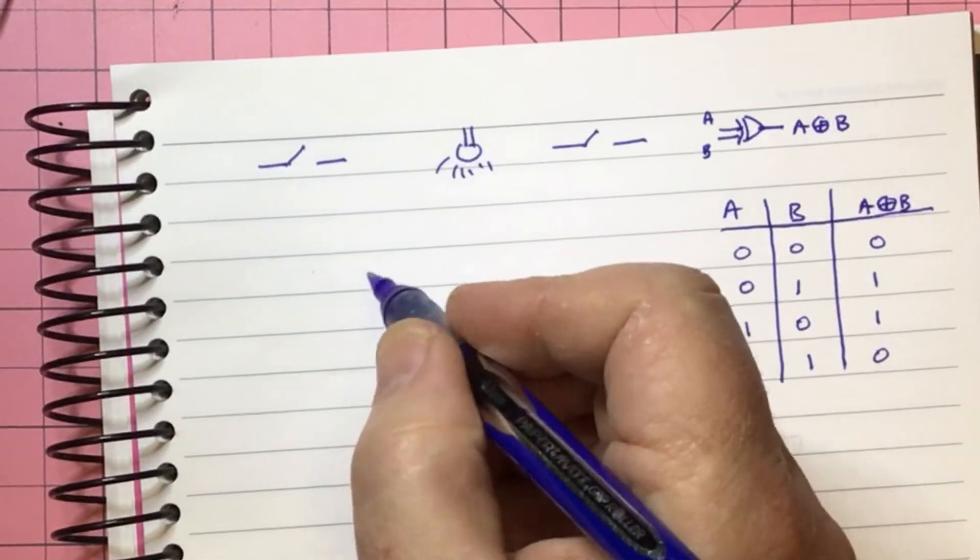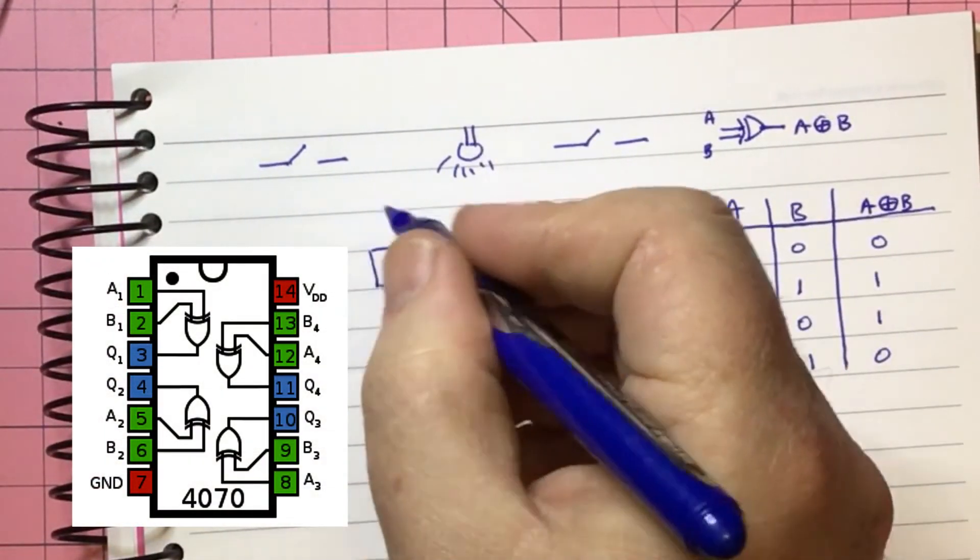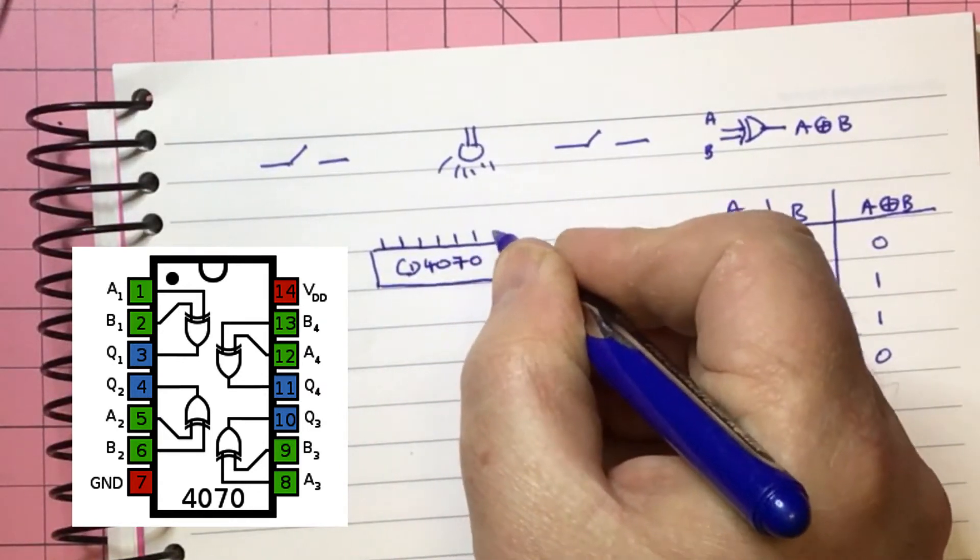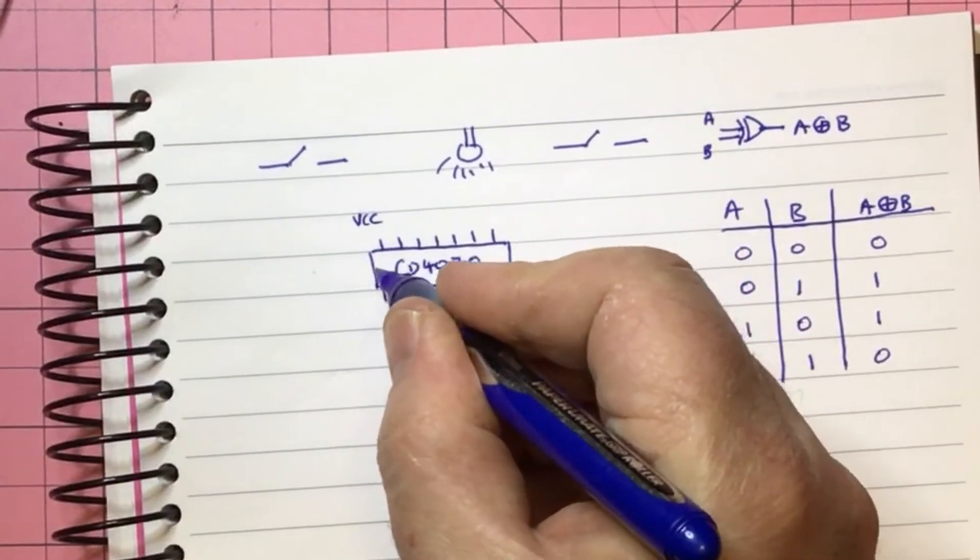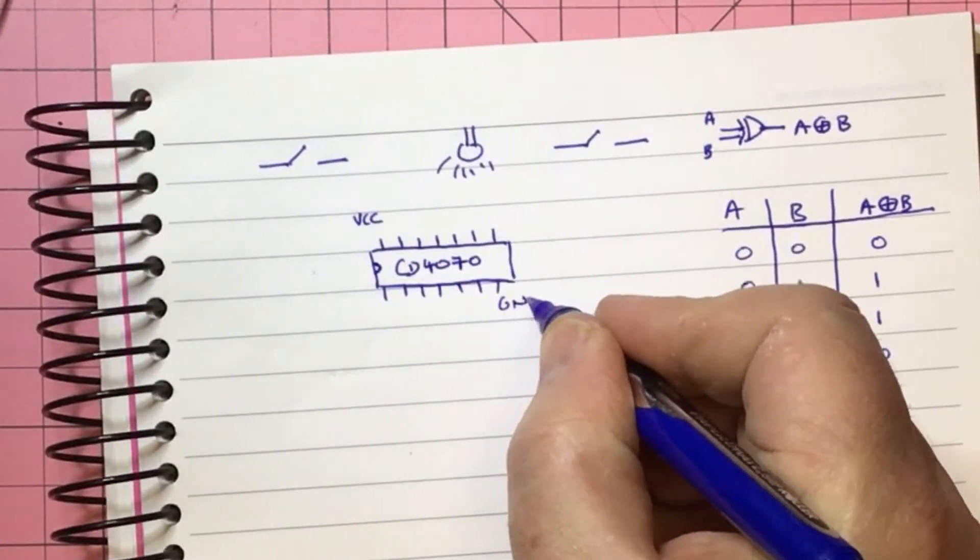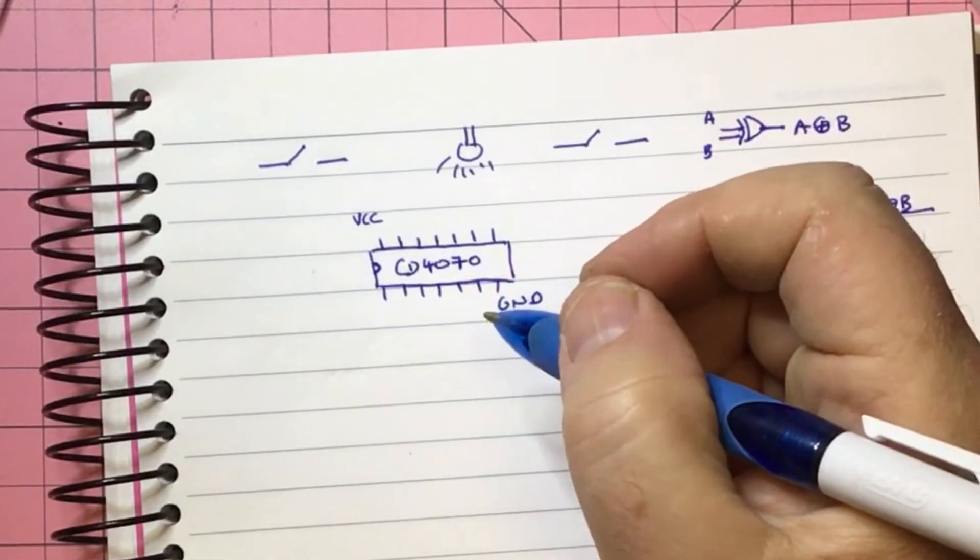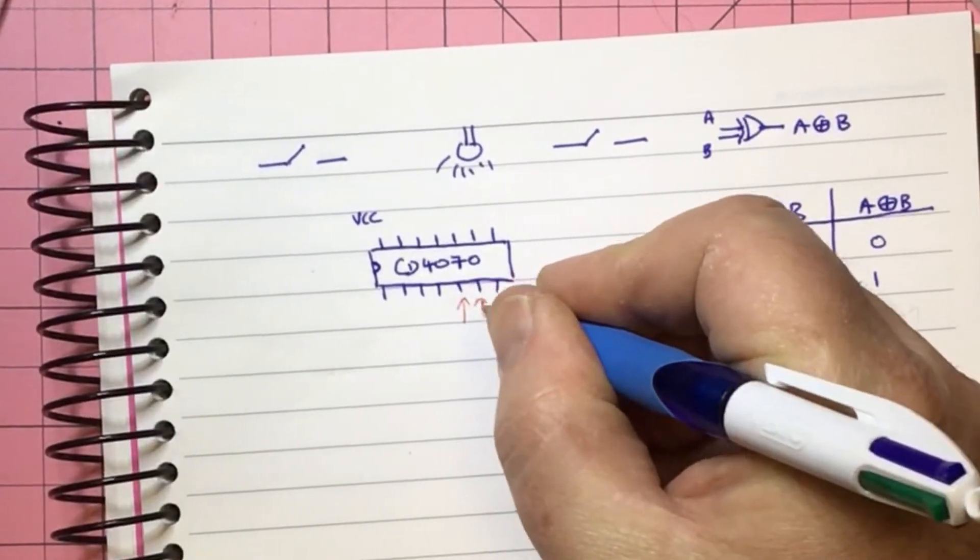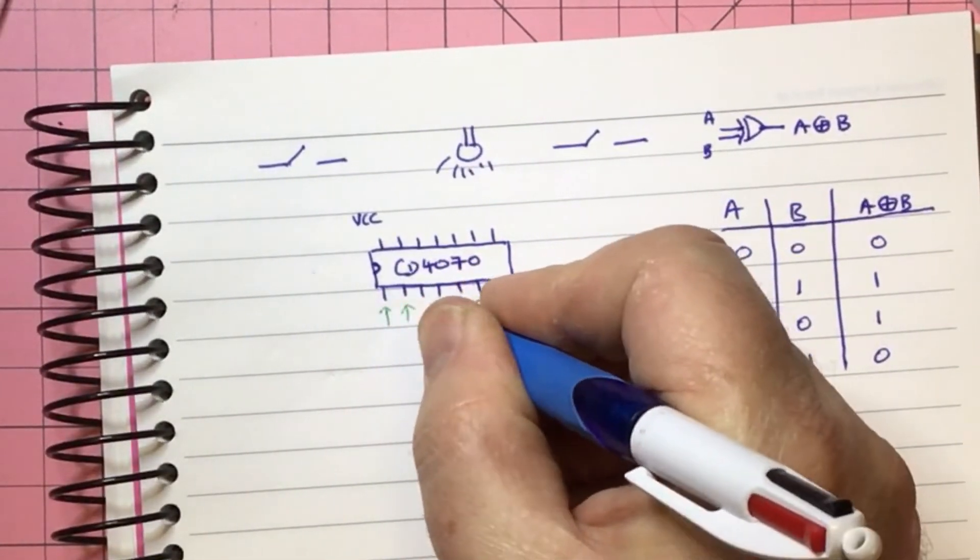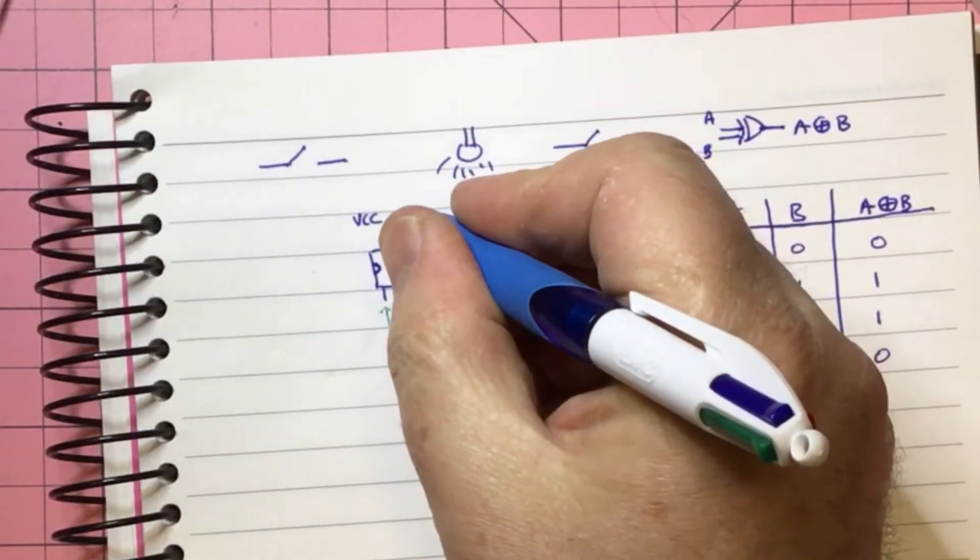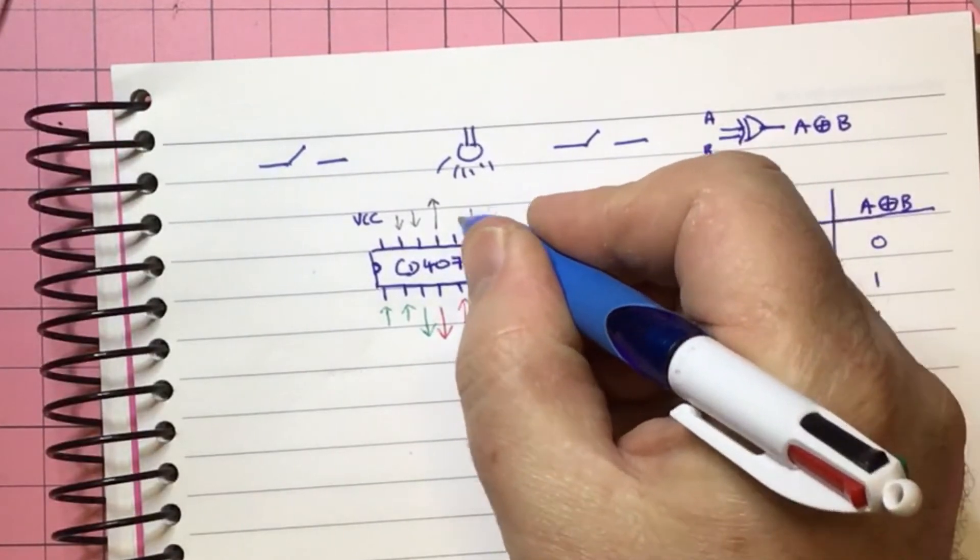Now to do that we could use a CD4070 quad XOR gate. So we've got 14 pins in a pretty standard configuration. We've got VCC and this is pin number one here, and we've got ground. Then we've got two inputs here and here with an output on this pin. We've got two inputs coming in here with an output here. We've got two inputs here and here with an output here, and we've got two inputs here and here with an output here.